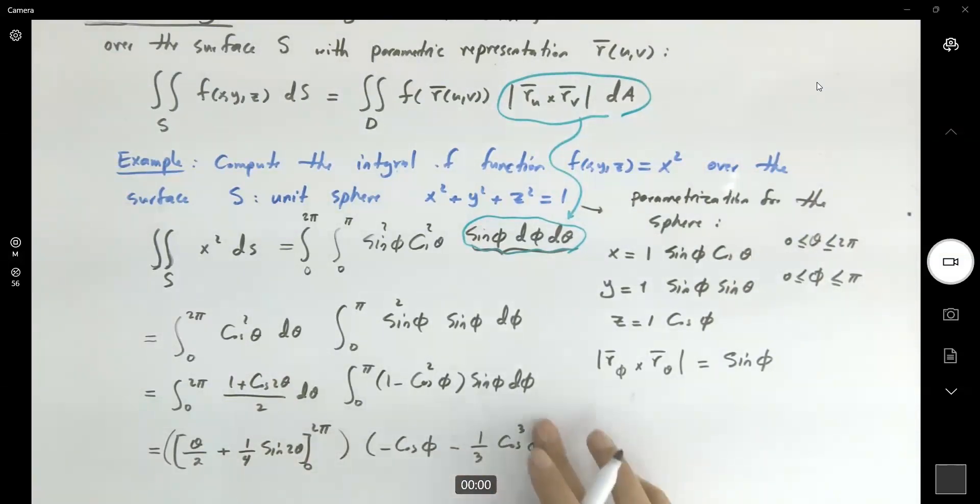And φ ranges between 0 to π. So this becomes 2π/2 = π. In either case, it's going to be 0. And if I plug in π here, I get -(-1), and here -1/3 times (-1), minus if I plug in 0, I get -1 - 1/3.